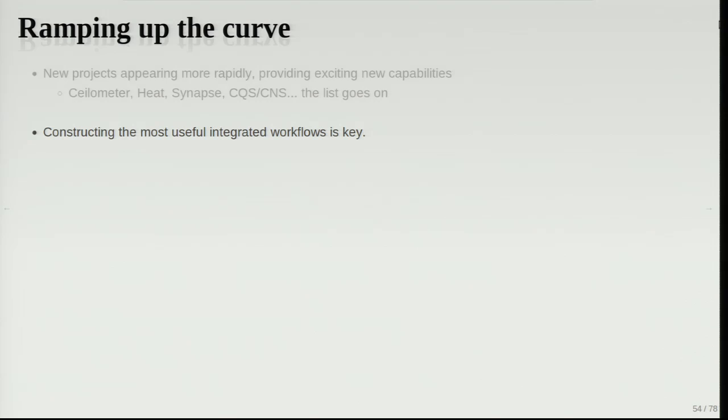Looking at the not-so-near future: we're starting to get to that inflection point where new projects are coming along much more quickly than they used to. We've seen a lot of new things announced just at this summit — Ceilometer, Heat, Synapse, the Comcast guys with their CQS and CNS, people announcing things left and right. As those keep coming down the pipeline, some may be core, some may not, but we want to make sure they're all well integrated in the dashboard. Workflows that can span multiple services should encompass these in ways that work if they're enabled and don't break if they're not.